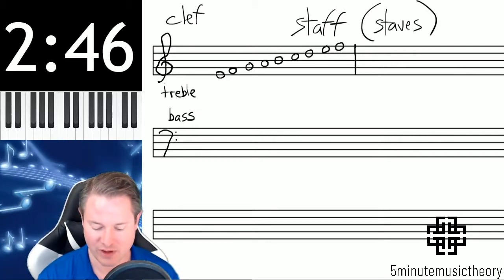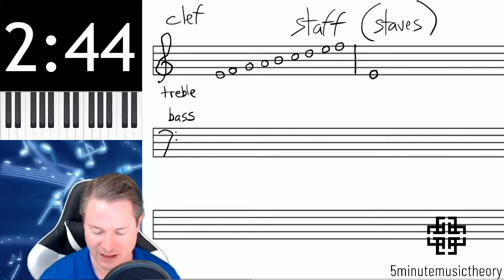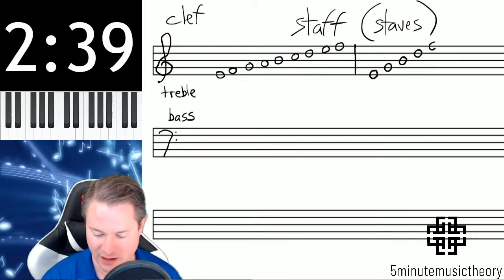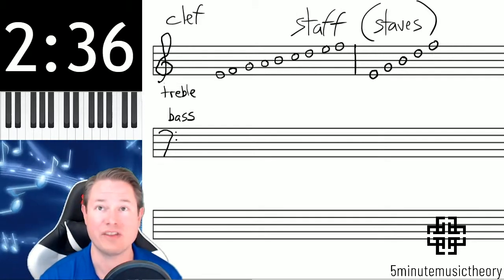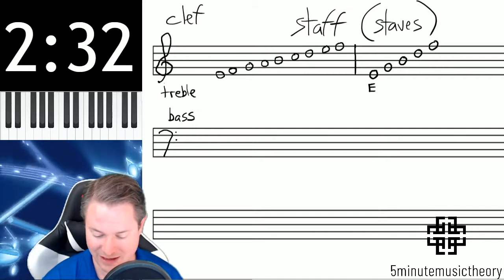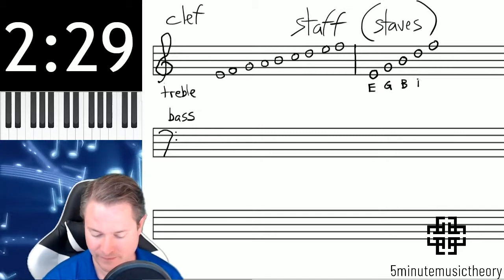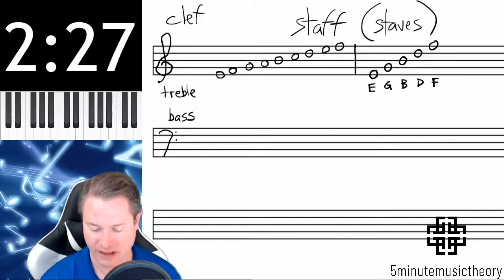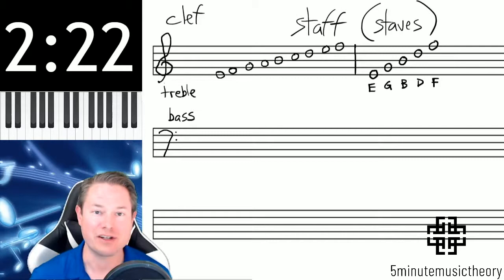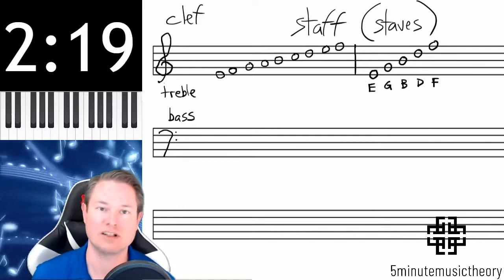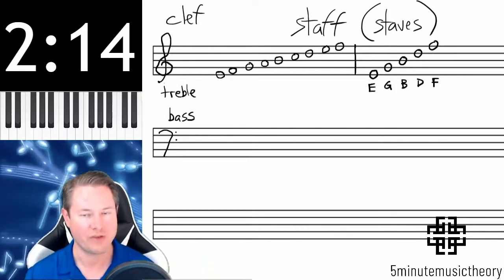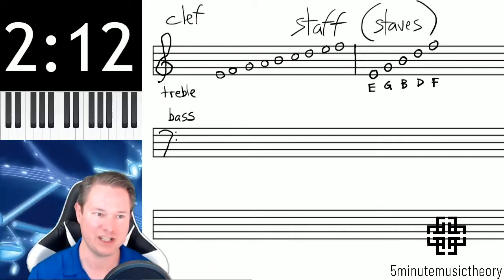One of the easier ways to remember the pitches in treble clef is this. Some of you might remember this from grade school. Usually this is taught at some point. The notes that are on the line in treble clef, we assign these letters to them: E-G-B-D-F. Sometimes there are mnemonic devices that are used to remember these. One of the more popular ones is every good boy does fine or every good boy deserves fudge. However you want to remember it, the notes that are on the lines in treble clef are E-G-B-D-F.